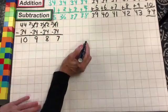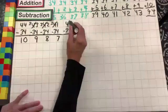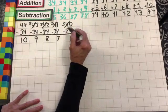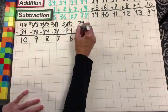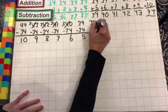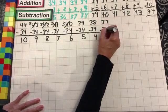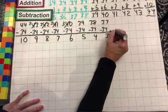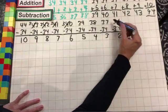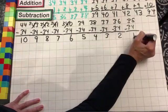40 minus 34: 4 from 0 cannot do — borrow from the 4, making it 3, and making that 10 minus 4 is 6; 3 minus 3, nothing. 39 minus 34: 9 minus 4 is 5; 3 minus 3, nothing. 38 minus 34: 8 minus 4 is 4; 3 minus 3, nothing. 37 minus 34: 7 minus 4 is 3; 3 minus 3, nothing. 36 minus 34: 6 minus 4 is 2; 3 minus 3, nothing. 35 minus 34: 5 minus 4 is 1; 3 minus 3, nothing.